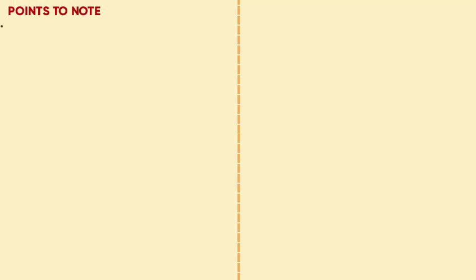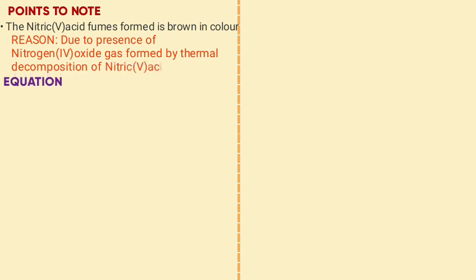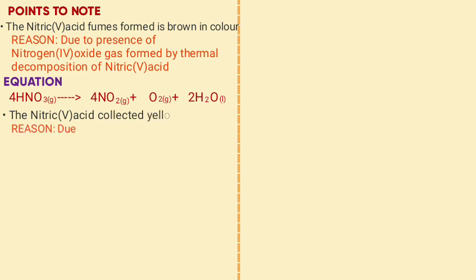Points to note: the nitric acid fumes are brown due to the presence of nitrogen dioxide formed by thermal decomposition of nitric acid, as shown by the equation: nitric acid gives nitrogen dioxide plus oxygen plus water. The nitric acid collected is yellow in color due to the presence of dissolved nitrogen dioxide gas.